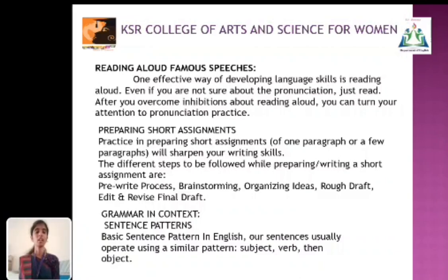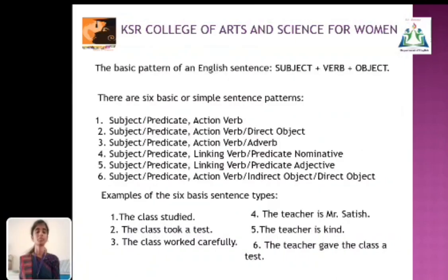Grammar and context — sentence patterns. Basic sentence patterns in English: sentences usually operate using a similar pattern — subject, verb, and then object. The basic pattern of English sentences is subject plus verb plus object.